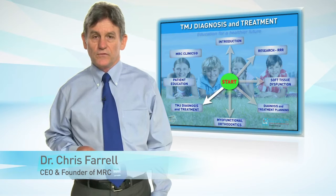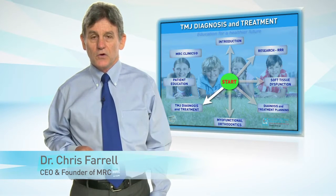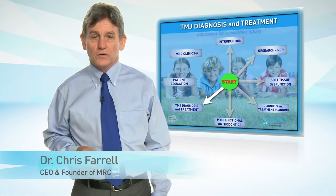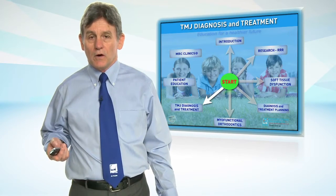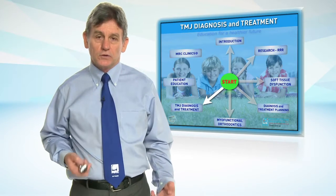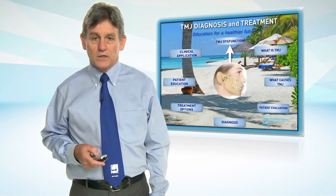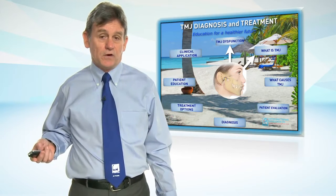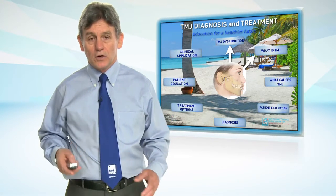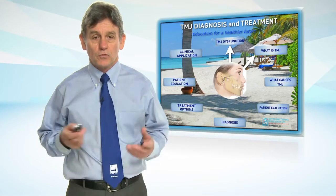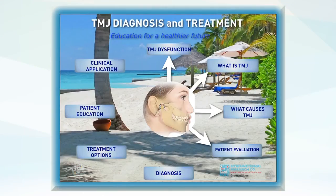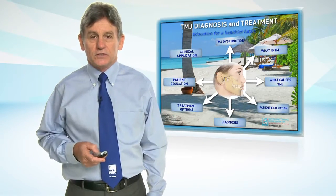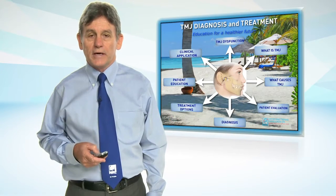One of the areas where I find doctors get very confused is TMJ diagnosis and treatment. For us it's an integral part of my functional orthodontics. If you have poor oral function or soft tissue function, nearly always you'll have some sort of TMJ disorder. So let's look at how we break it up. We have to define TMJ dysfunction, what causes it, how do we evaluate the patient, what's our diagnosis, what are the treatment options, and how do we make it work in practice.